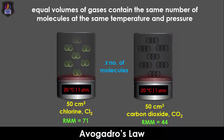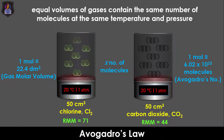This is true because one mole of every gas at STP occupies the same volume of 22.4 dm³, which is known as the gas molar volume, and also one mole of a gas contains 6.02 × 10²³ molecules, which is Avogadro's number. Therefore, if two gases occupy the same volume at STP, they will both contain Avogadro's number of molecules.